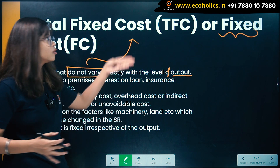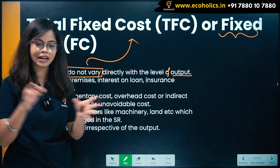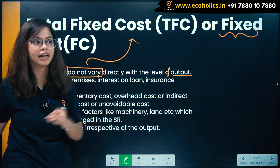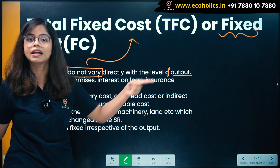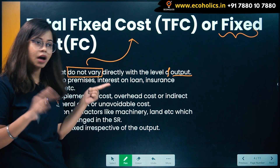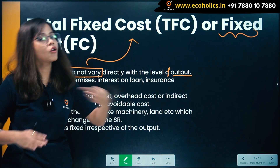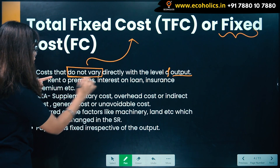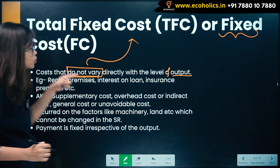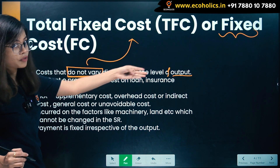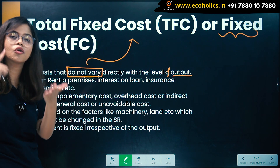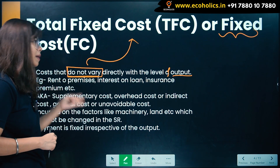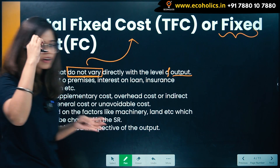For example, land where there was production — you have to pay rent on that land. Even when output is not being produced, you still have to bear the cost. That is known as the cost that does not vary directly with the level of output. Irrespective of whether production is happening or not, you have to bear the cost.